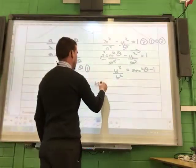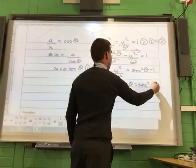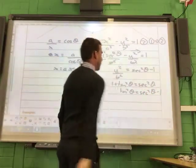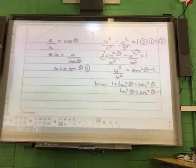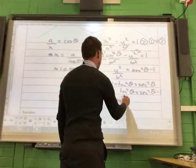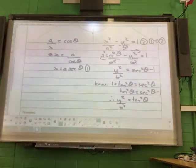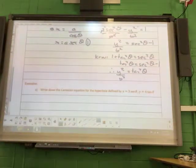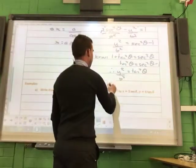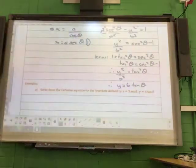We know 1 plus tan squared theta is sec squared theta. So tan squared theta is going to be sec squared theta, take away 1. Therefore, y squared over b squared is tan squared theta. Right, and take the square root of everything and move that b on the other side. So therefore, y is b tan theta.